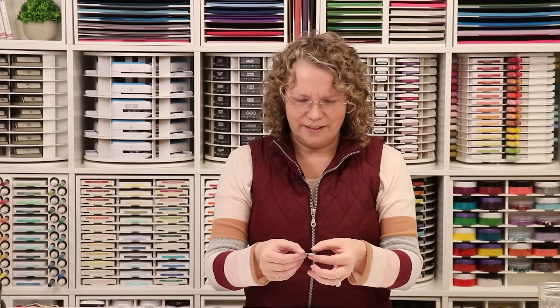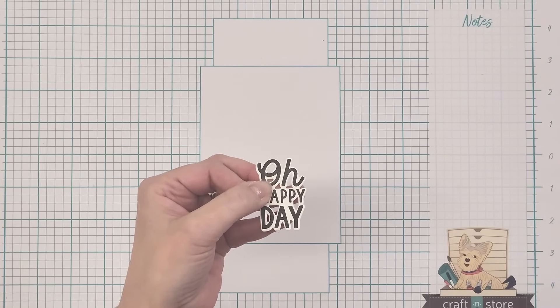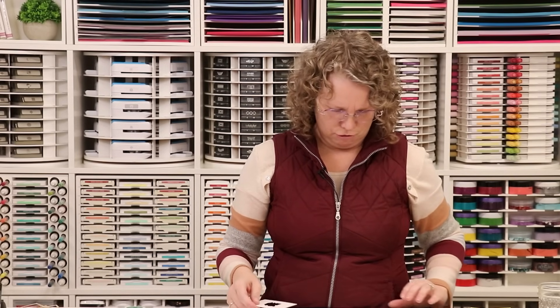Alright, tip number two. If you've ever die cut and stamped your image, line up your die to cut it out and then you run it through and it shifts too close to the top or the bottom and it's not quite right, it can be really frustrating. So this one, again my tips, I do not claim to have come up with any of them myself, but I have just found wonderful use for them and they make things run great.